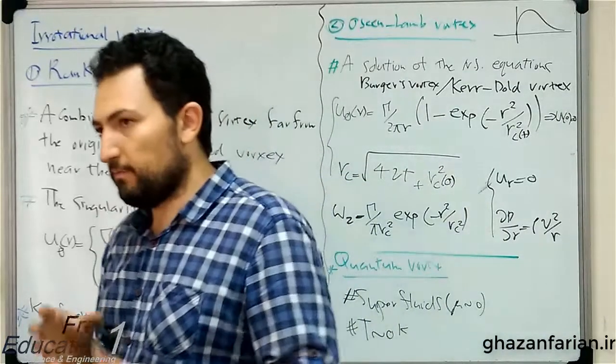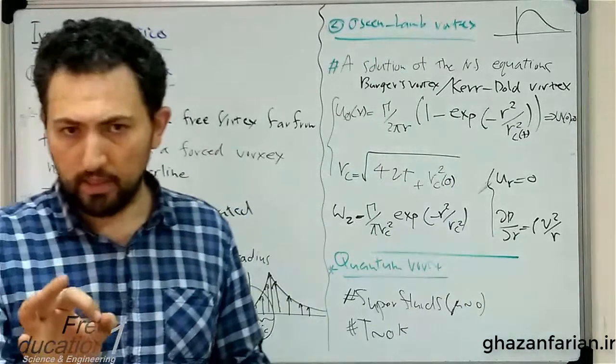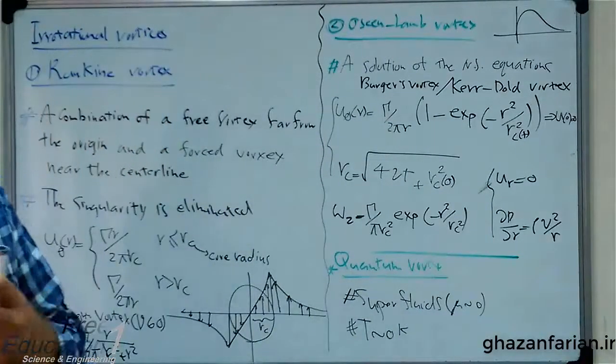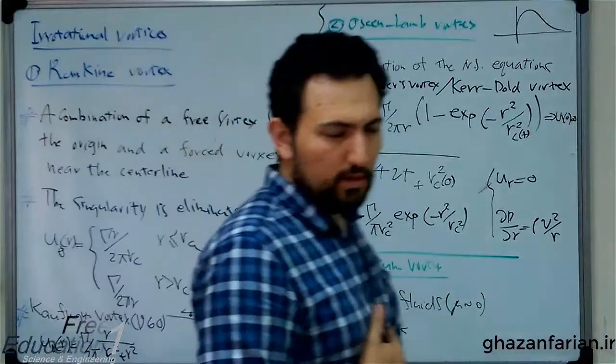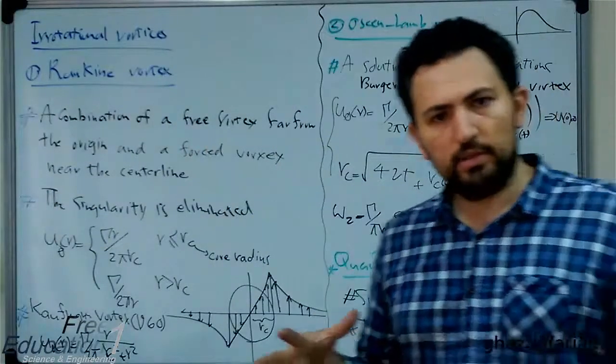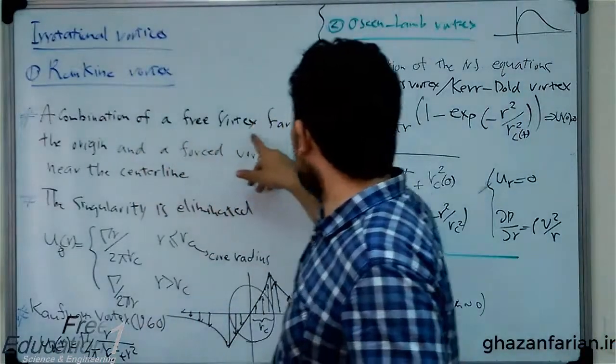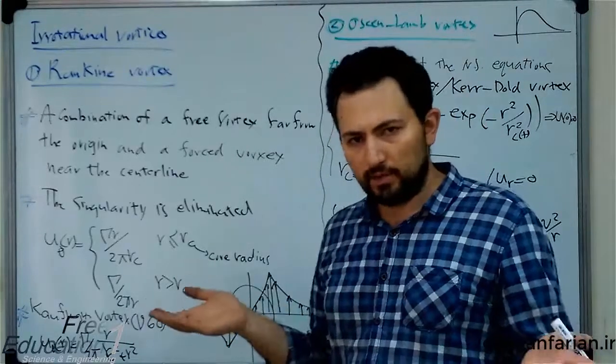As I've mentioned, the singularity appears on the origin. So we have to find a core region surrounding the centerline in which the flow is rotational. But far from the origin, the model used for the free vortex is acceptable and appropriate without singularities.